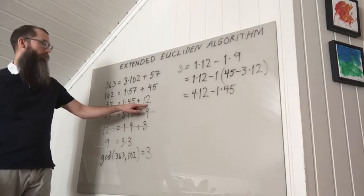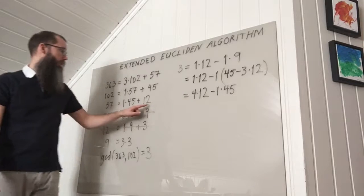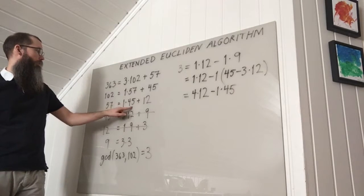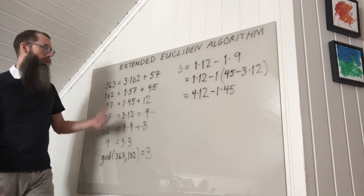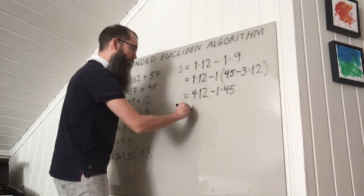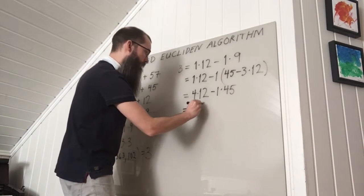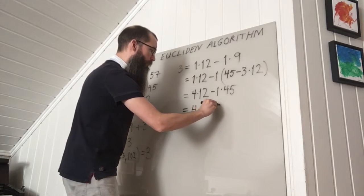Then I want to express 12, the 12 I have here, as a combination of 57 and 45. So I see that I can move this term to the other side and replace 12 by 57 minus 45.